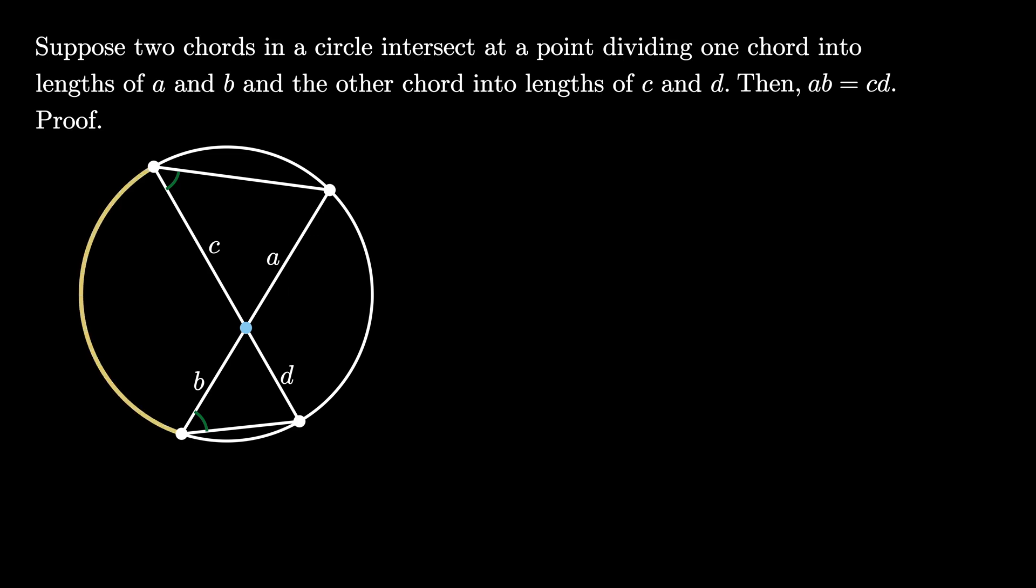Likewise, there's an angle in each triangle subtended by this arc. This one here, and this one in the other triangle. Once again, because these two angles are subtended by the same arc, they're congruent.